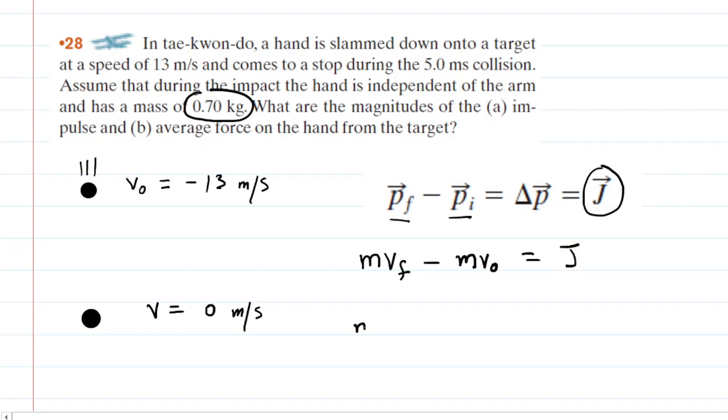We can actually factor out the mass. This gives us the final velocity minus the initial velocity. Perhaps in our original diagram, we can call the final velocity VF.